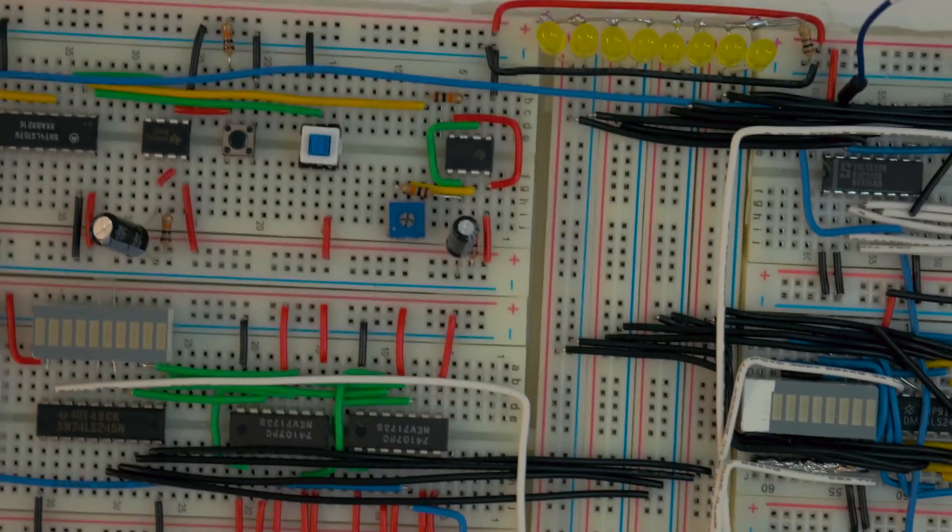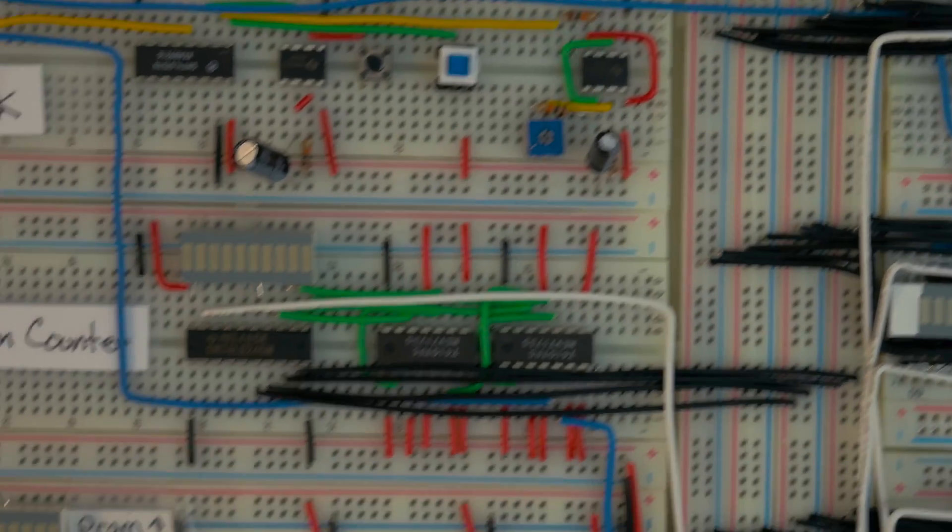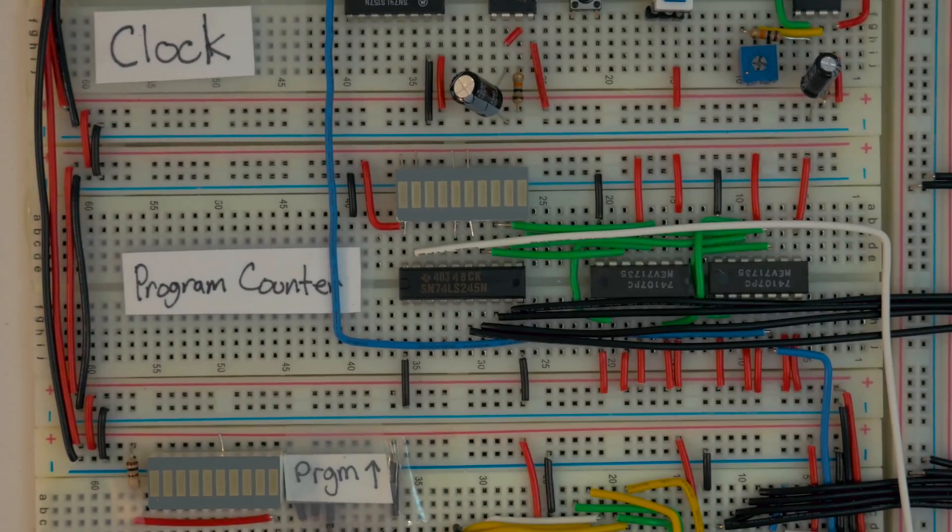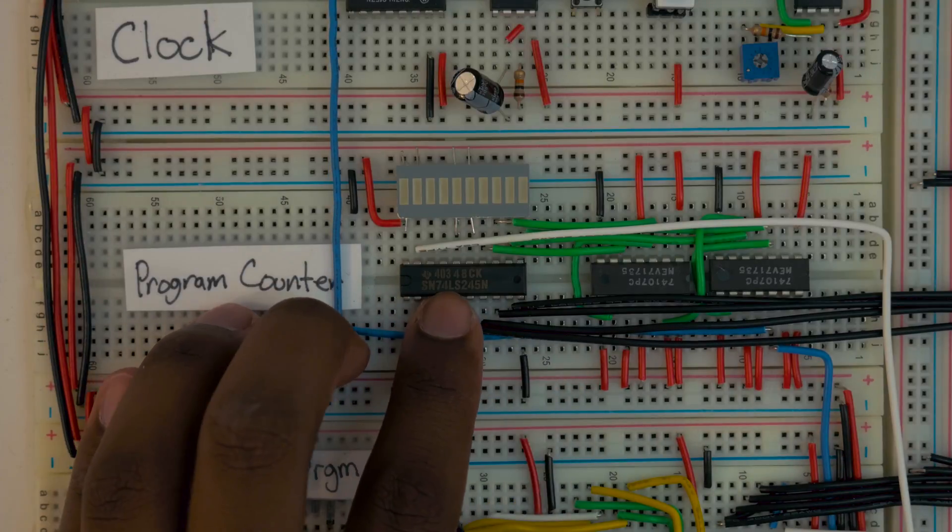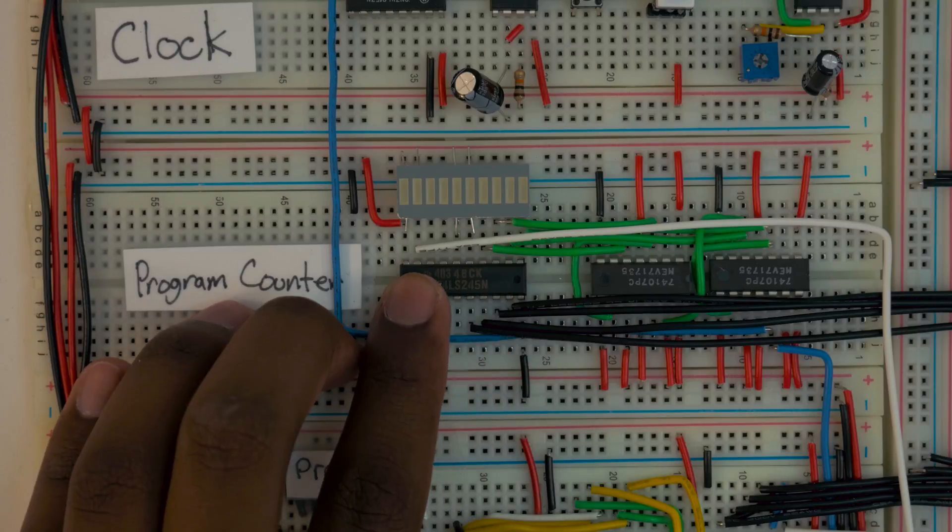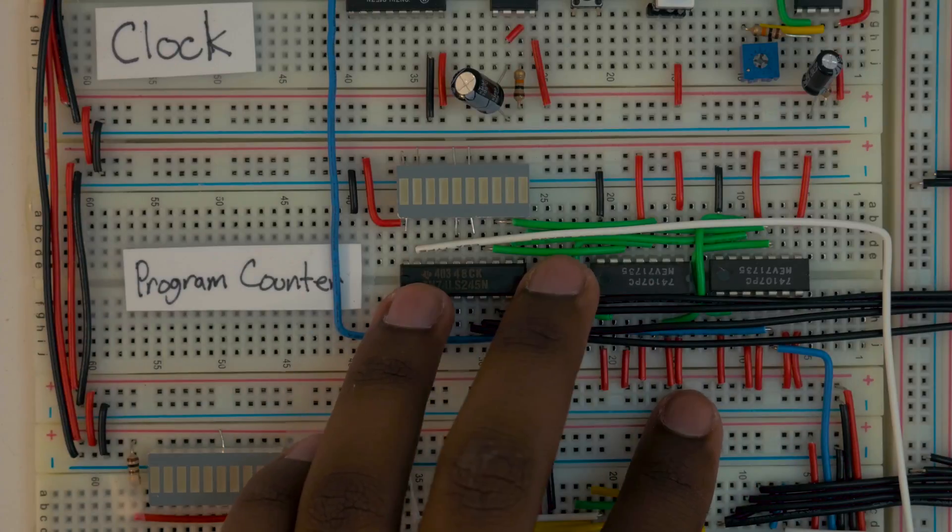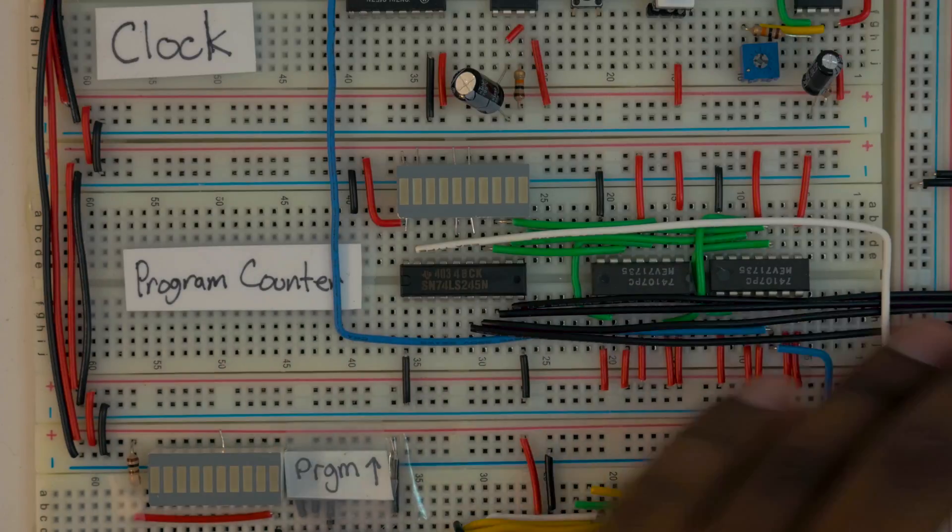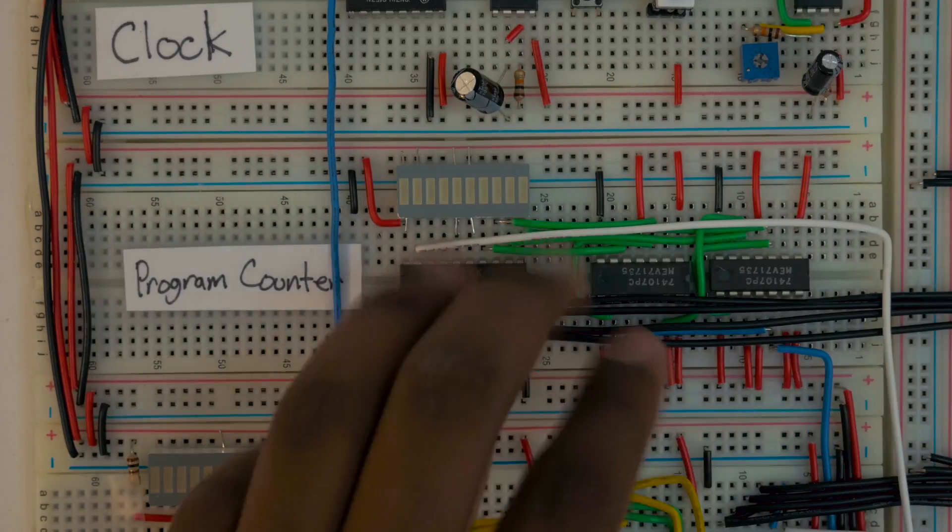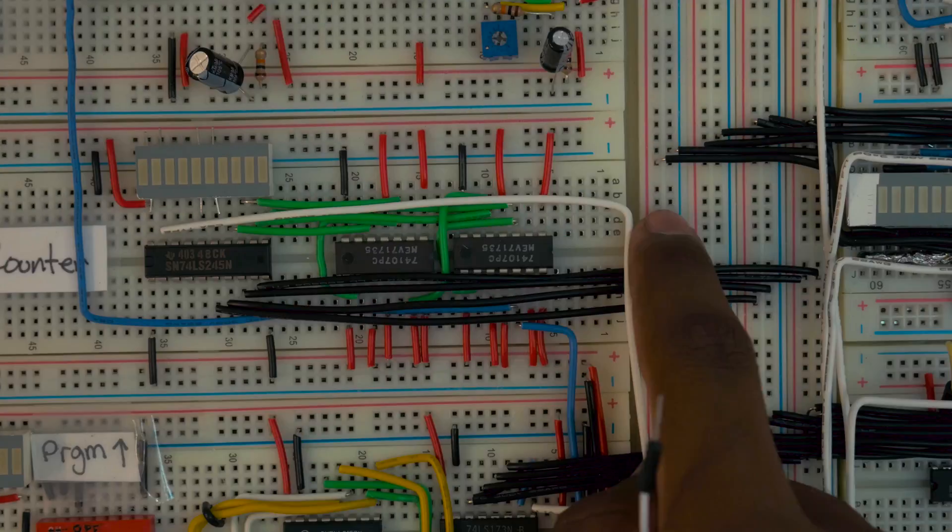I added, I connected the program counter up to the bus. So you guys can see the program counter right here. I added a 74LS245, which is a tri-state buffer, up to this program counter. So this will just buffer the values that are in the program counter out onto the bus. This, of course, has its own output enable line, which will go down into the control hub area.